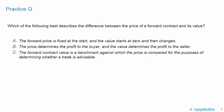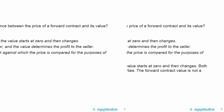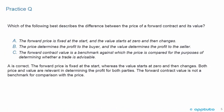Practice question: Which of the following best describes the difference between the price of a forward contract and its value? A: the forward price is fixed at the start and the value starts at zero and then changes. B: the price determines the profit to the buyer and the value determines the profit to the seller. Or C: the forward contract is a benchmark against which the price is compared for the purposes of determining whether a trade is advisable. The correct answer is A — the forward price is fixed at the start, whereas the value starts at zero and then changes.